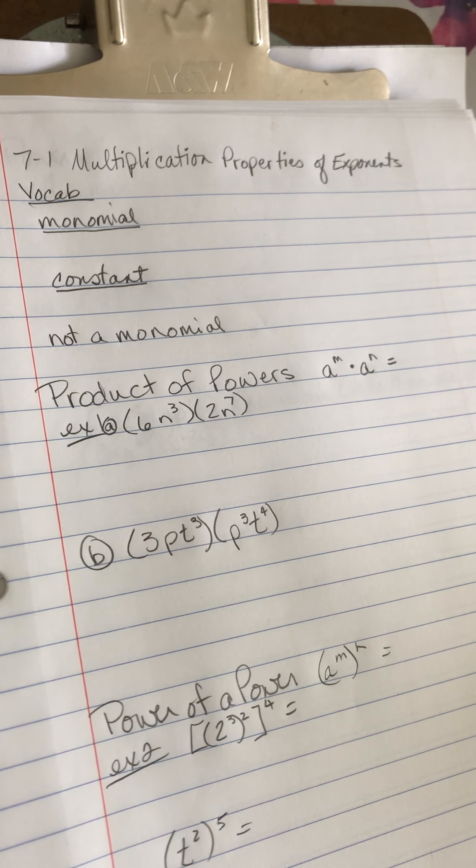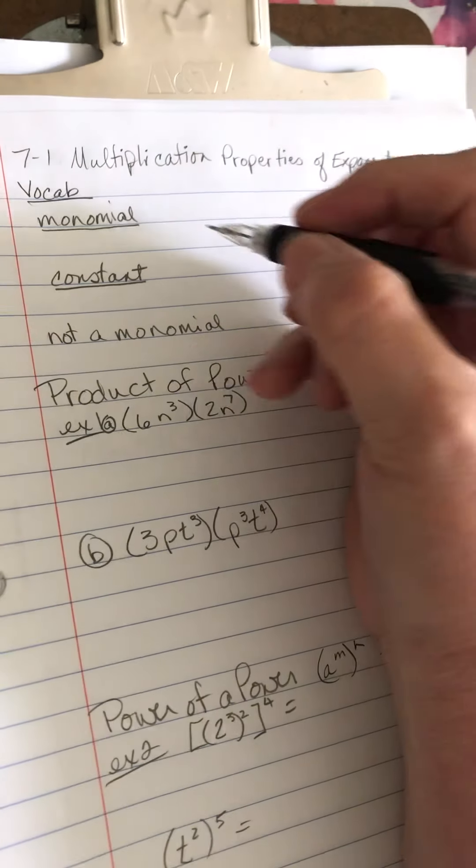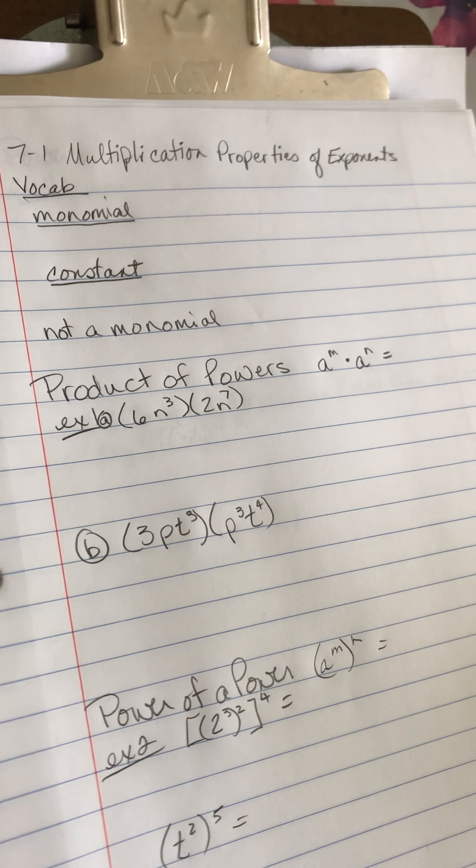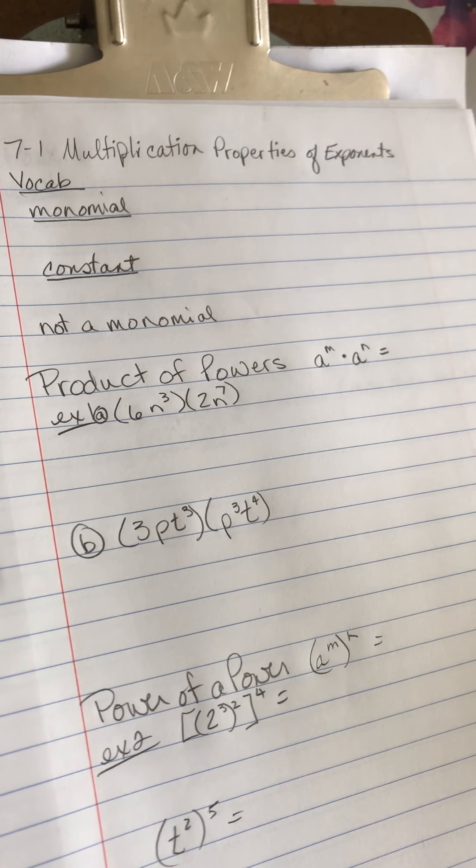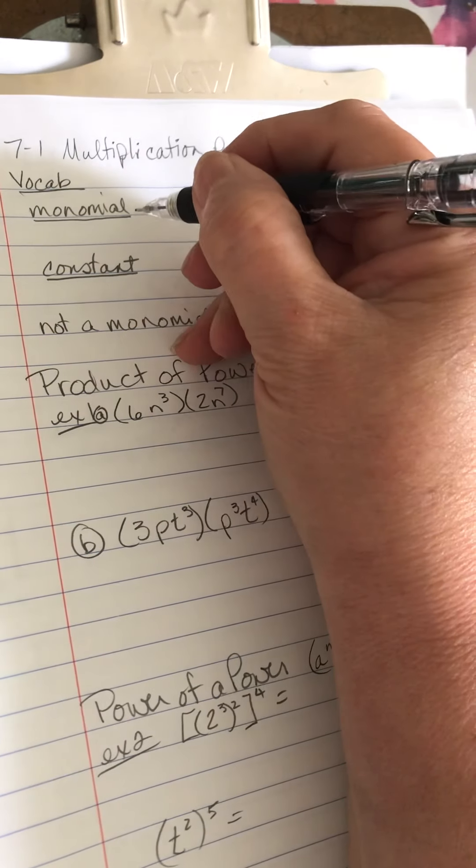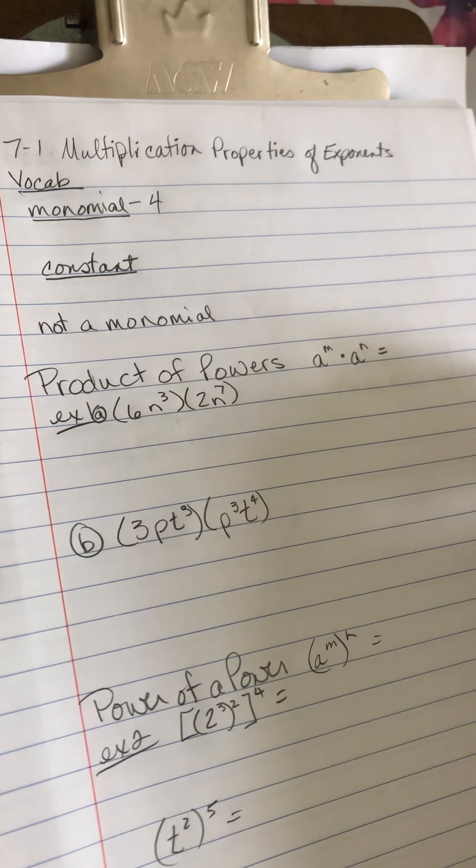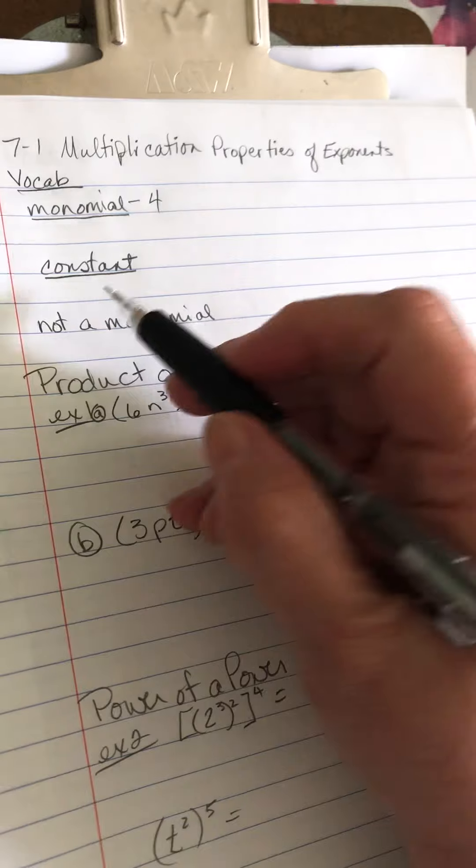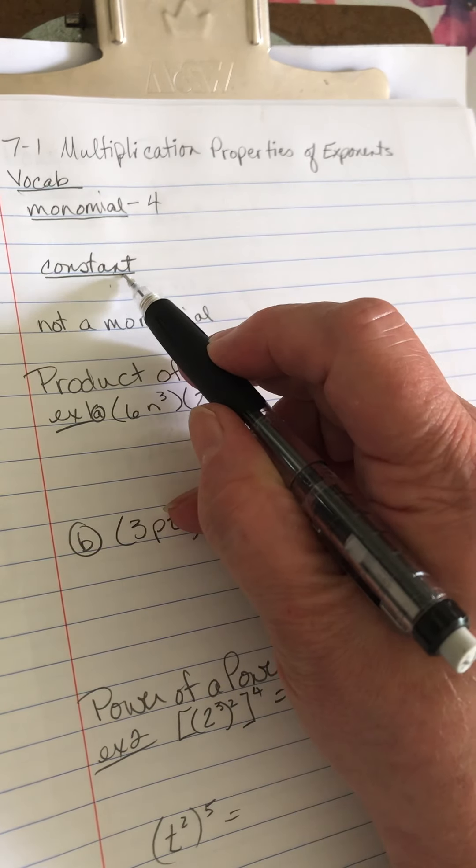A little bit of vocabulary you need to know. A monomial is a number, a variable, or a product of numbers and variables. So 4 is a monomial, 24 is a monomial, 400 is a monomial because it's a constant. A constant is a monomial.